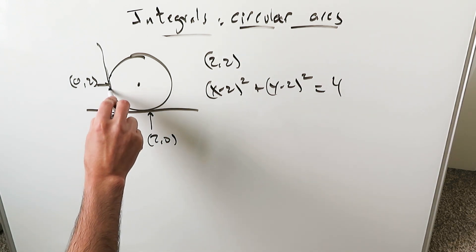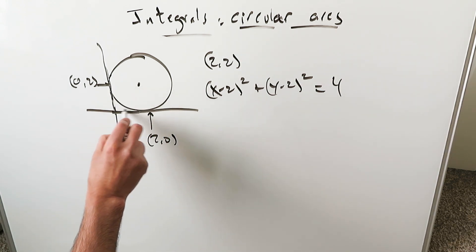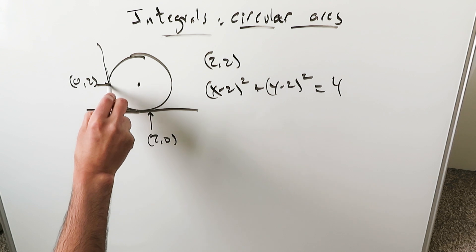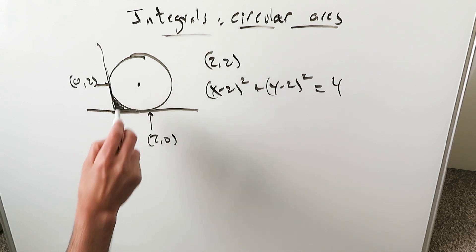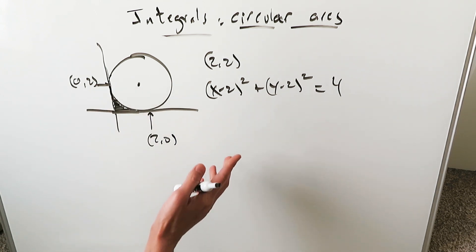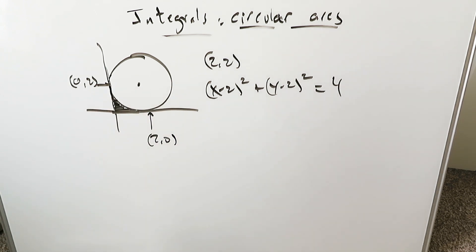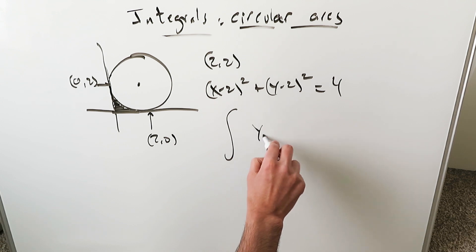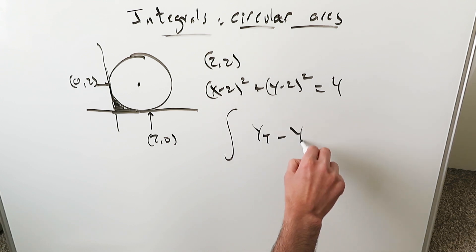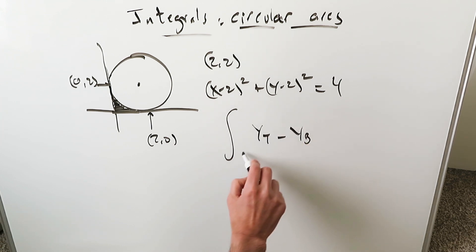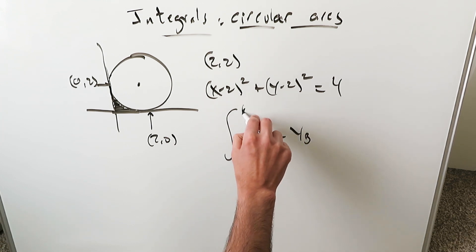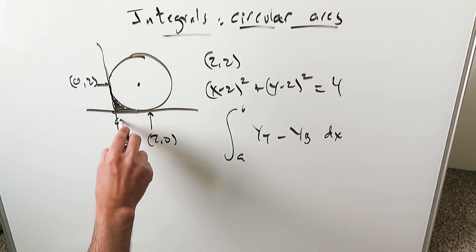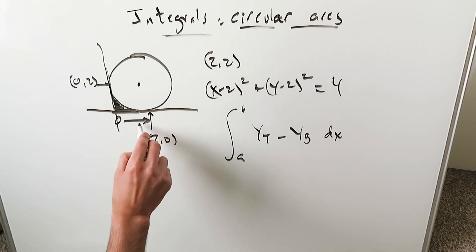If someone were to ask you what is the area of this shaded region, you can use integral calculus. You'll have a top boundary curve, a lower boundary curve, lower limit, upper limit, integrated with dx. You can go from 0 up to 2.